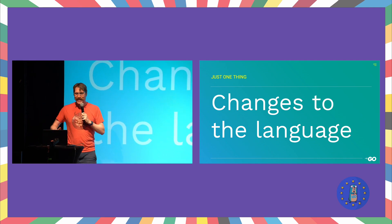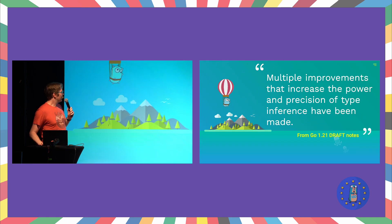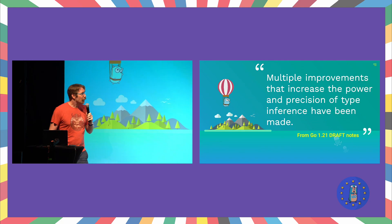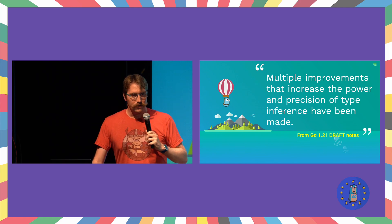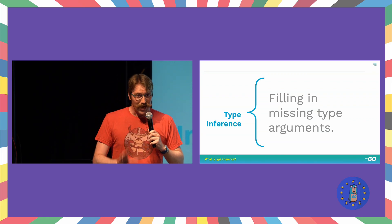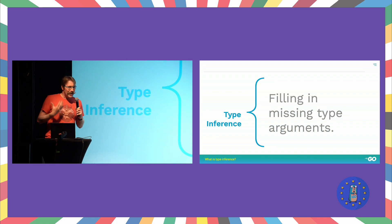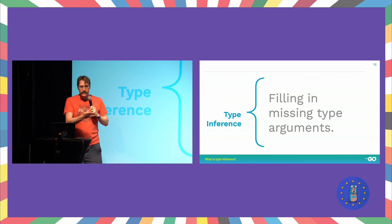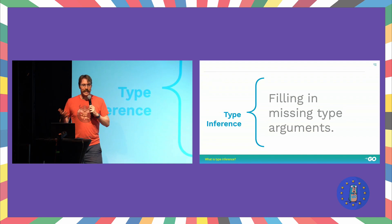After the new built-ins of min, max, and clear, and the changes to how init prioritization is done, there was this sentence: 'Multiple improvements that increase the power and precision of type inference have been made.' Type inference is basically how a compiler fills in the types that are missing when you are specifying a generic type — you can omit them and the compiler will figure it out based on the information it already has from your source code.